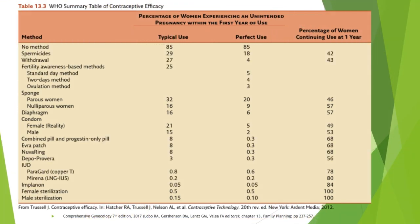This table shows a summary of the contraceptive efficacy of all contraceptive methods available for women. Spermicides have a fairly high failure rate with both typical and perfect use. Compare that with male sterilization, which has a very low failure rate at 0.15%. Implanon has a failure rate of 0.05% for both typical use and perfect use.